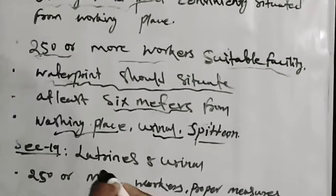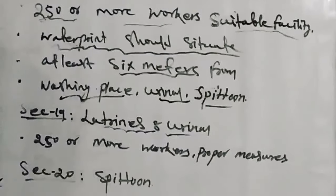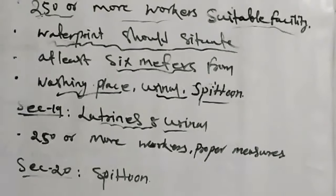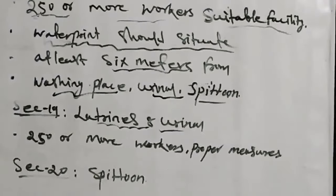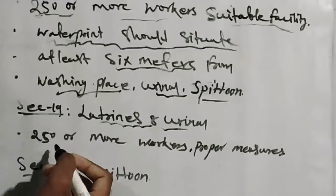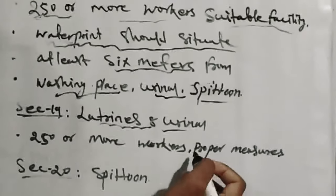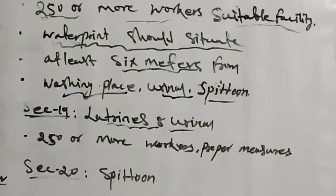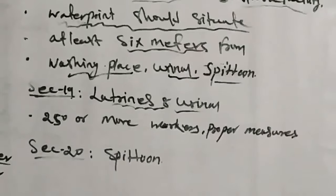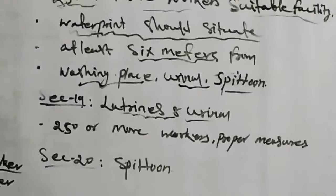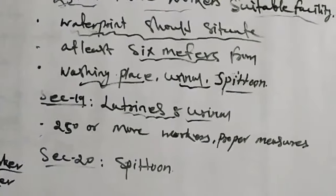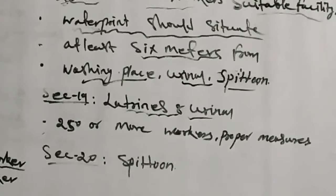Section 19: Latrines and Urinals. For proper health and safety of the workers, the occupier should ensure that proper latrine and urinal facilities are provided in the factory. Where 250 or more workers are working, proper measures should be taken. The latrines and urinals should be cleaned once in every week.